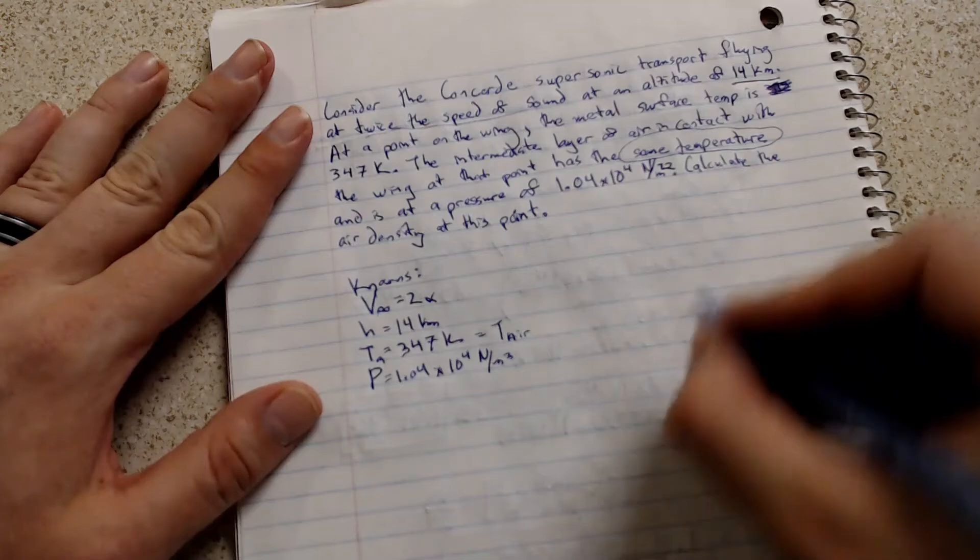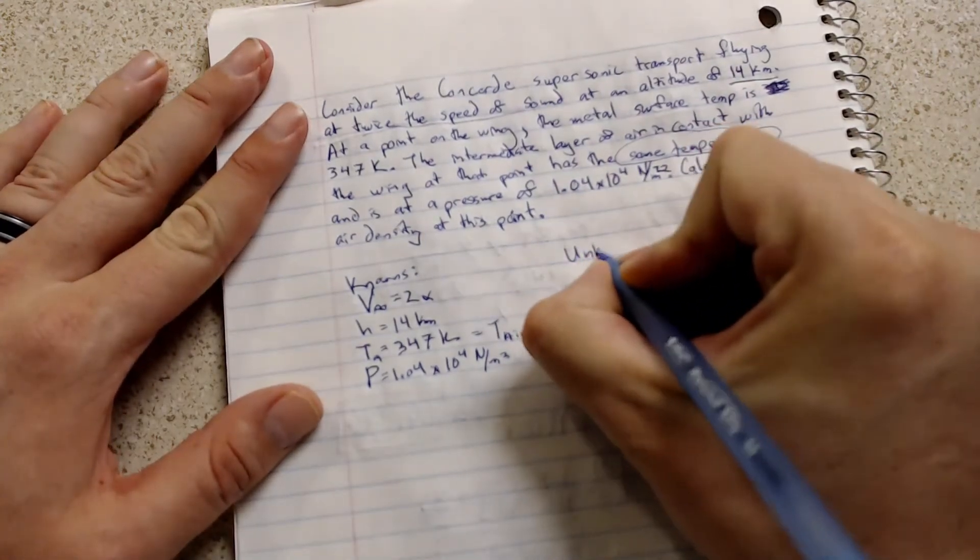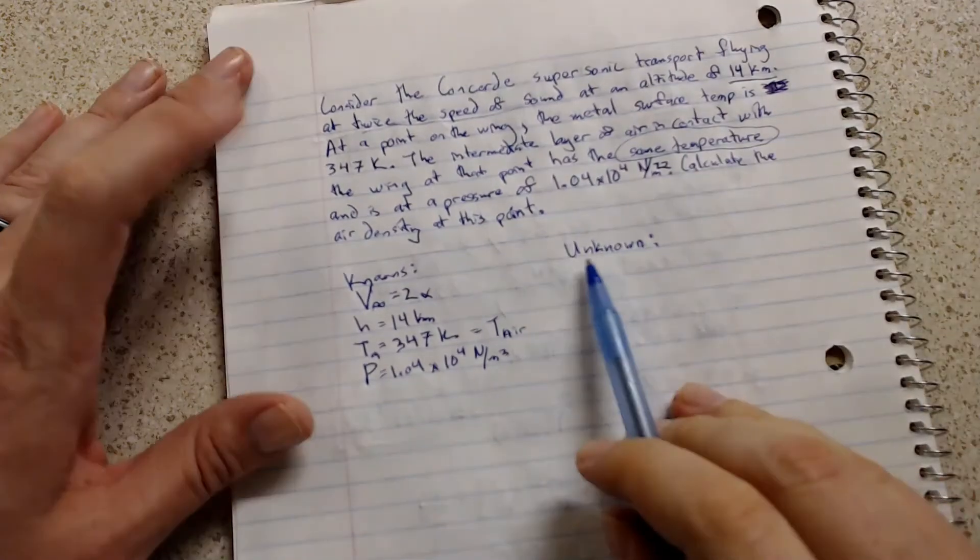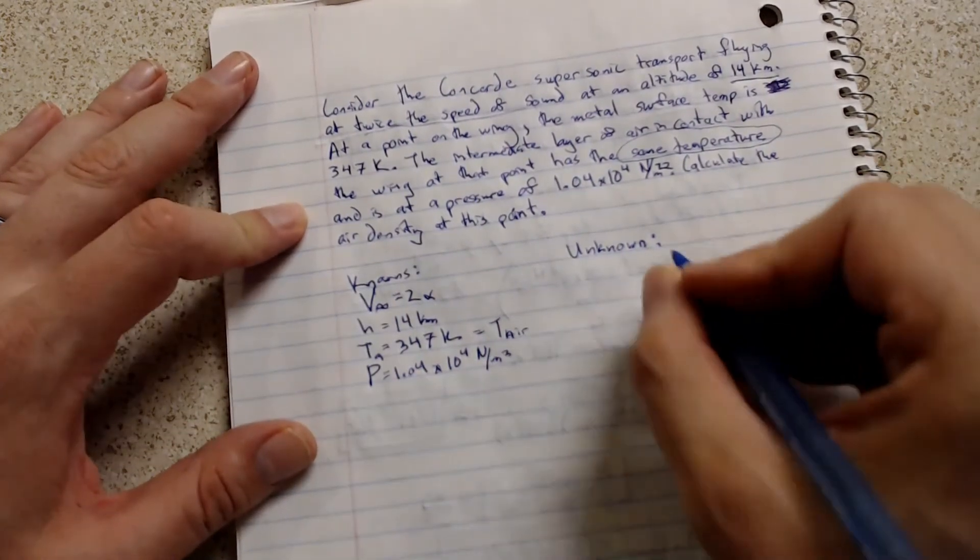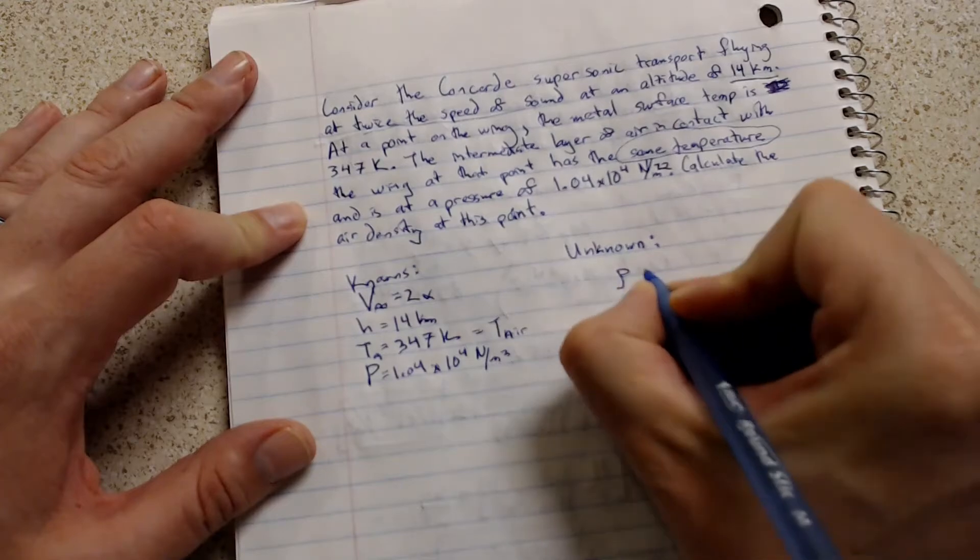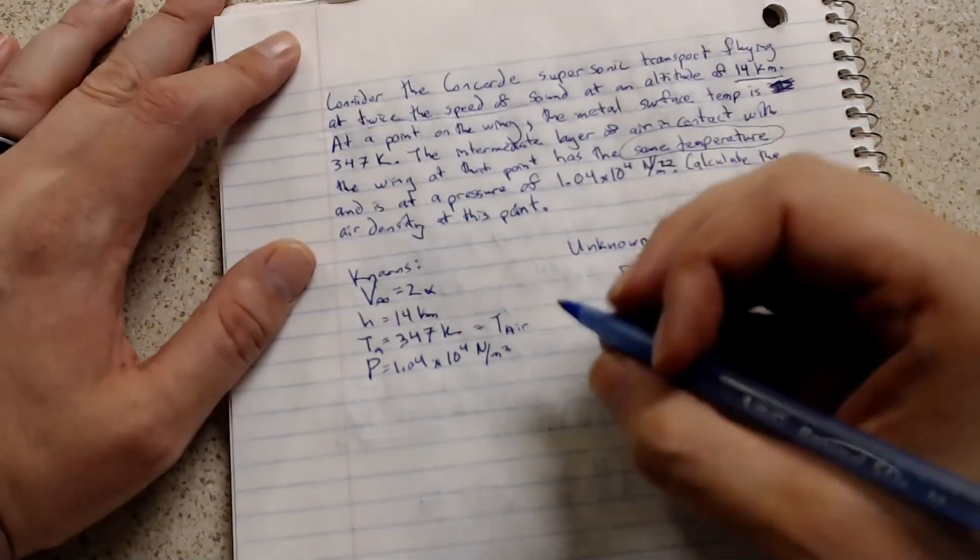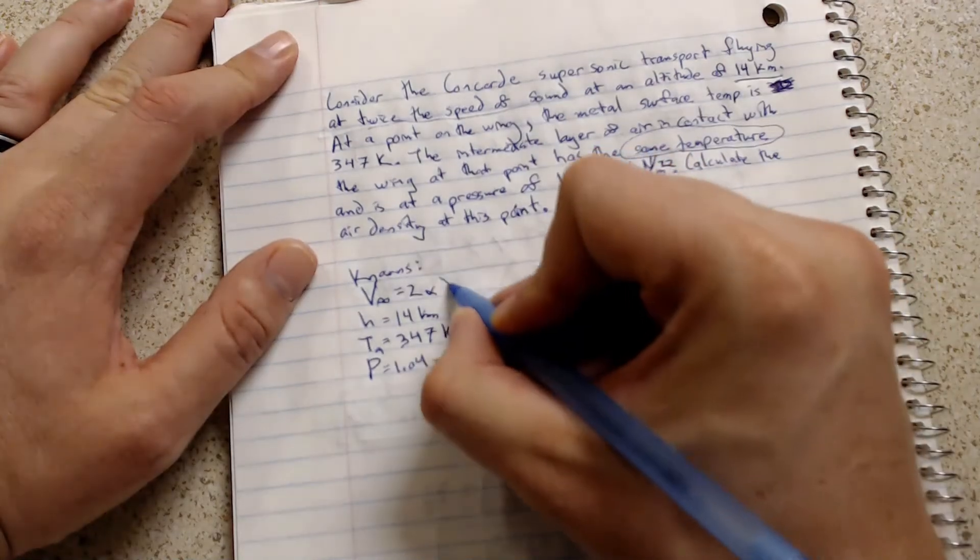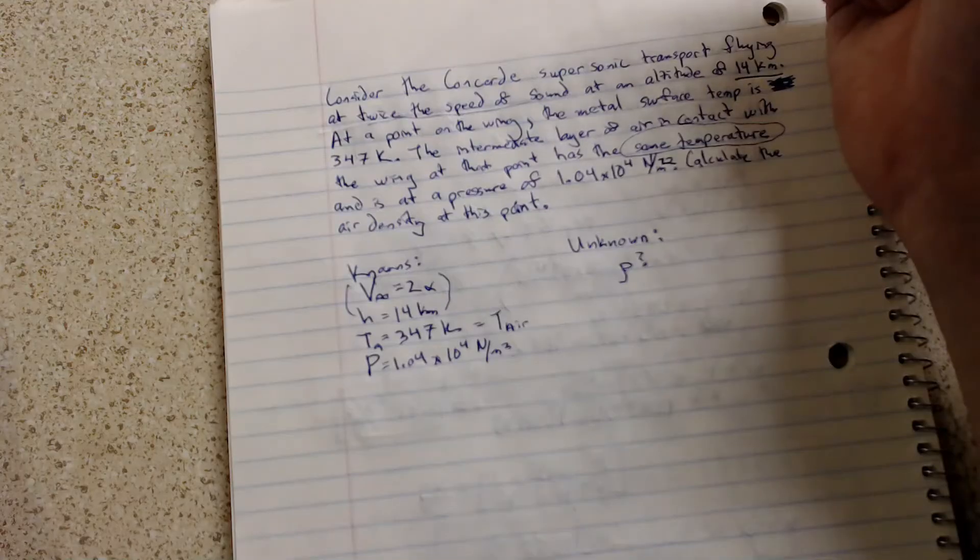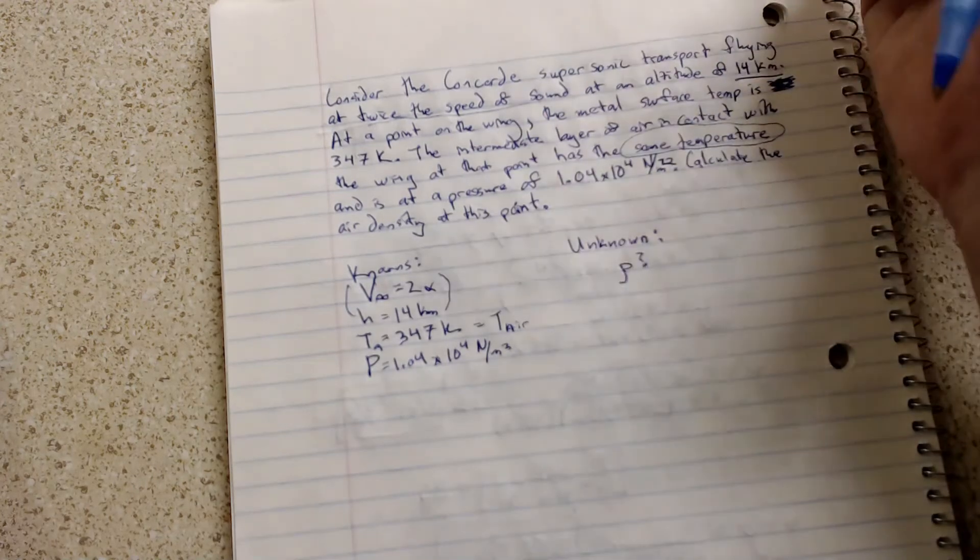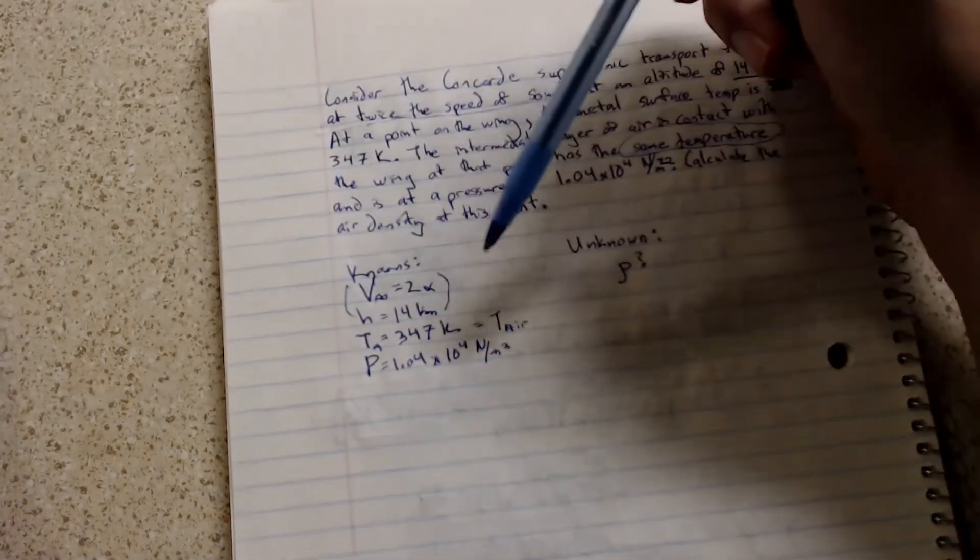Let's look at our unknowns. For a problem with so much wording, the only unknown that it is asking for is the density at that point. Now, this could be a tricky problem because you're seeing these values here. However, that is actually not needed. These are sort of a red herring.